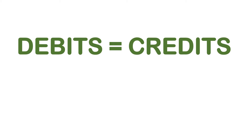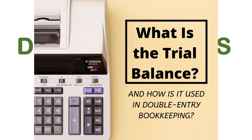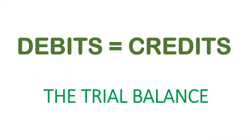We are able to ensure that these two are the same by preparing something we call a trial balance. A trial balance is a list of all the ledger accounts contained in the ledger of a business. This list contains the name of each nominal ledger account and the value of that nominal ledger balance.